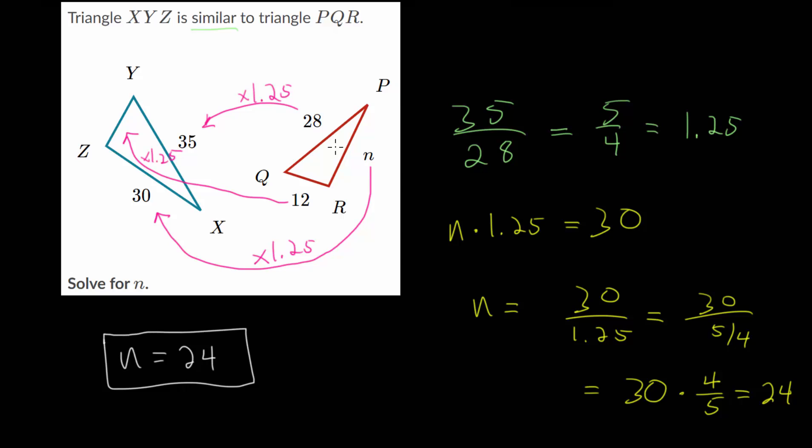And if we want, we can figure out this small side on the bigger triangle, since we're just taking 12 and multiplying by 1.25. And 12 times 1.25 would give us 15. So we can find all of the missing side lengths once we figure out that proportionality constant.